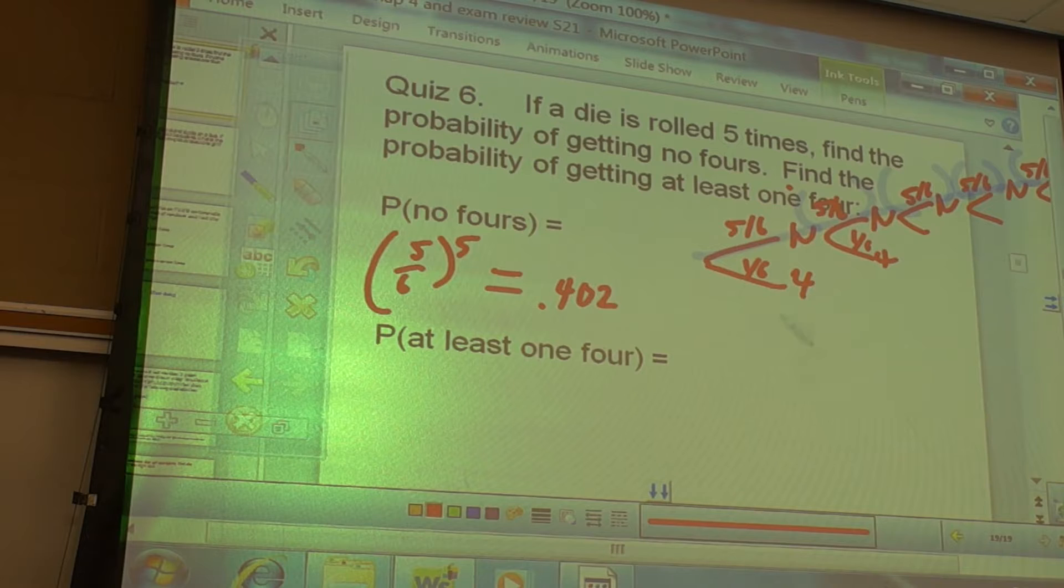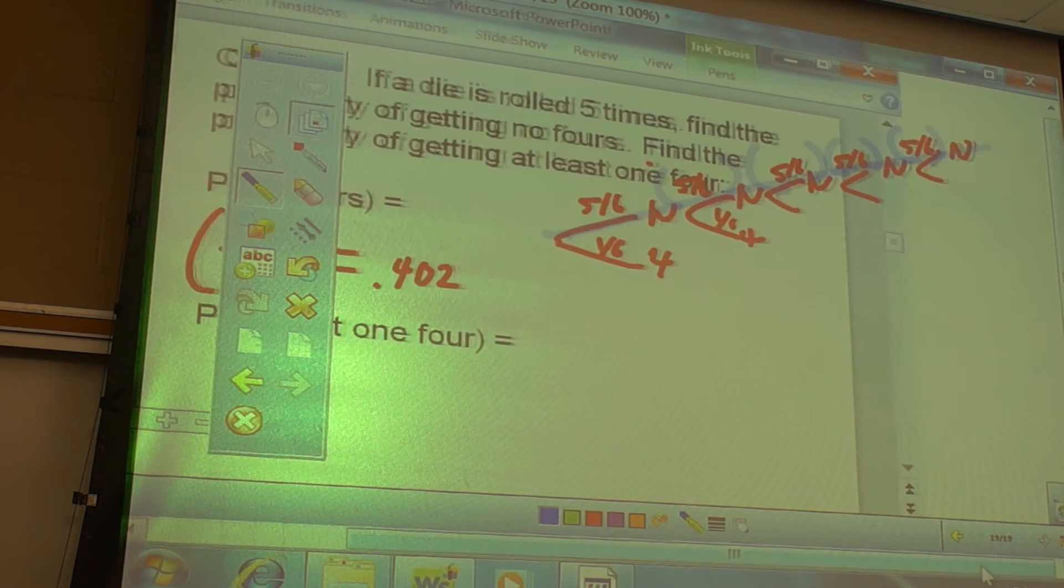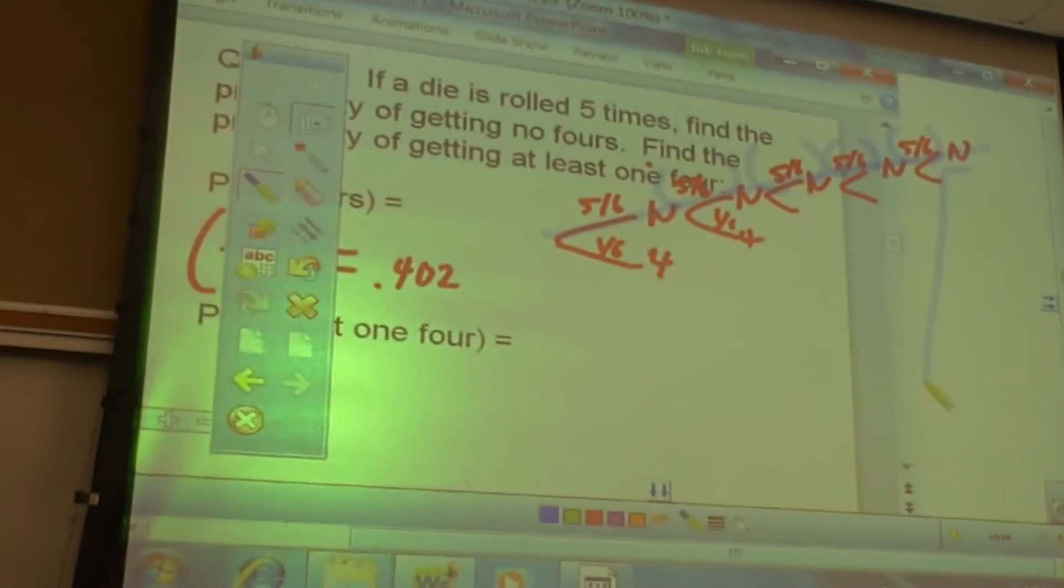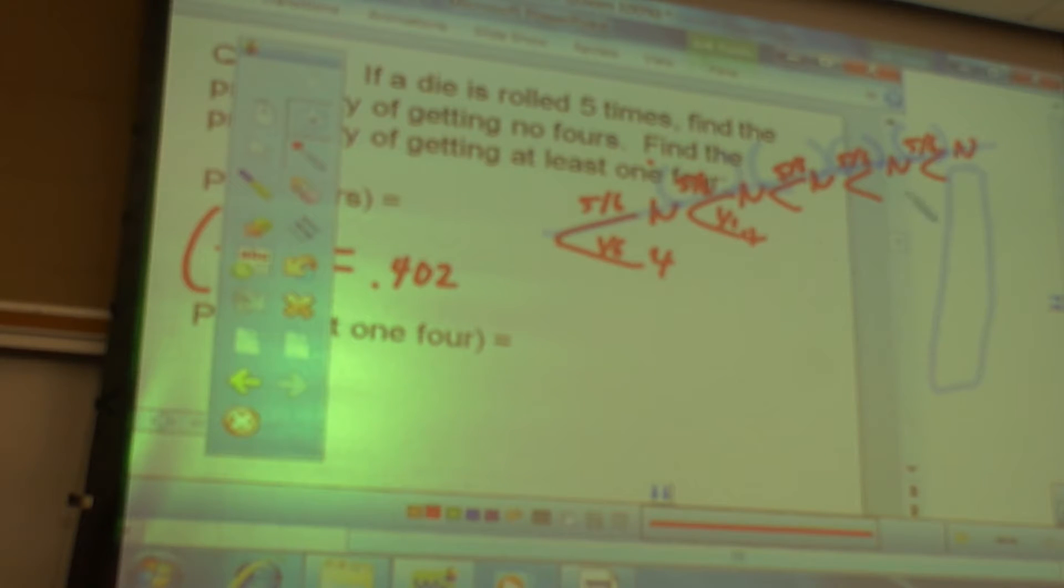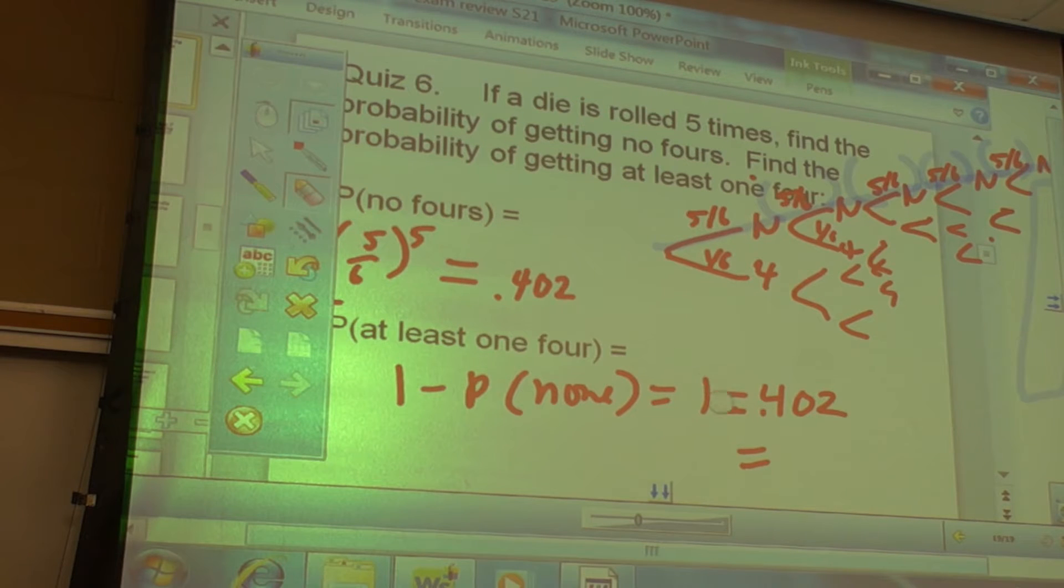Now, the probability of at least one four. That means all of these... Oops. Go this way. That means all of these other options down here if I had done this tree out all the rest of the way. Right? If all these other trees had kind of all come around, then it's all these other ones. How do I find that? The easy way? Yep. Oops. Oh, that was wrong. Not equals. Minus. My bad. .598.